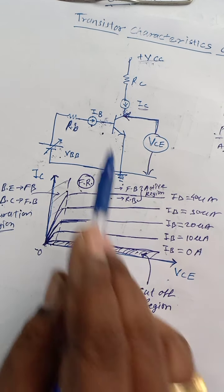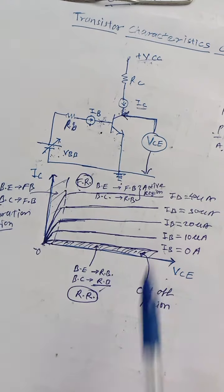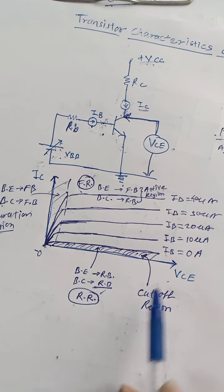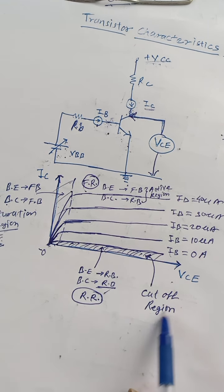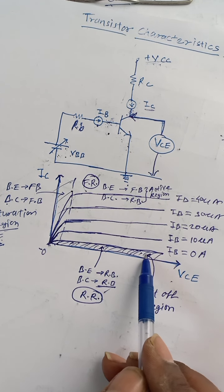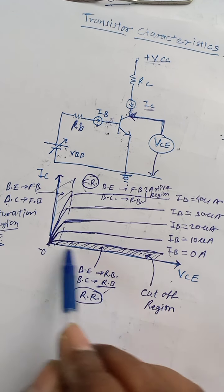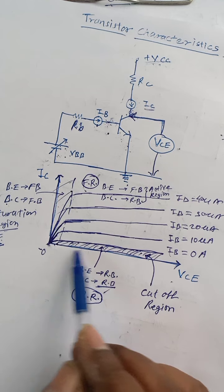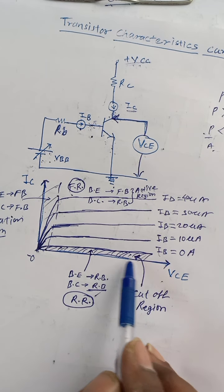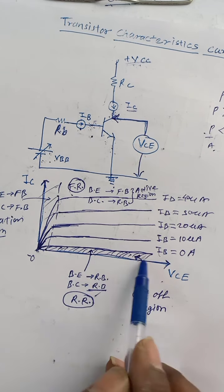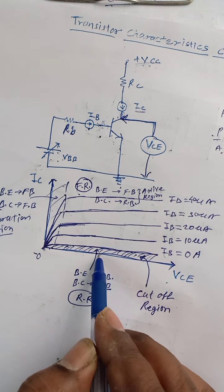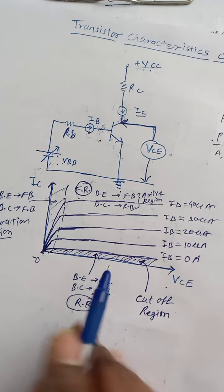In the cut-off region both junctions are reverse biased. This is a very small region — practically we cannot observe it, but theoretically we consider this region as cut-off region where the transistor is in off state. The collector current if you observe is nearly zero.